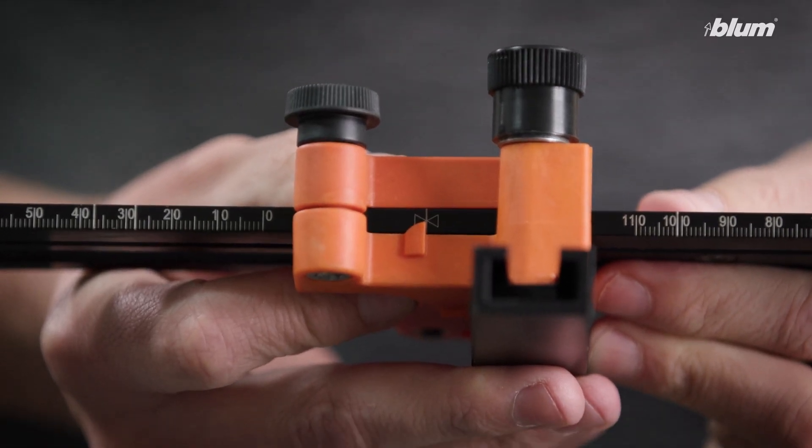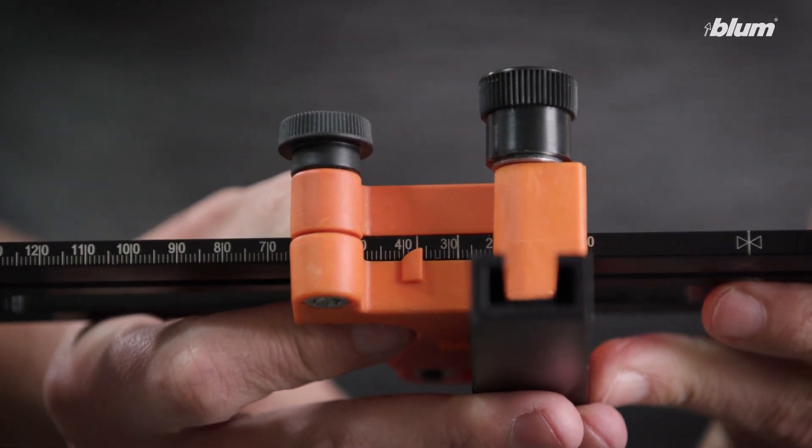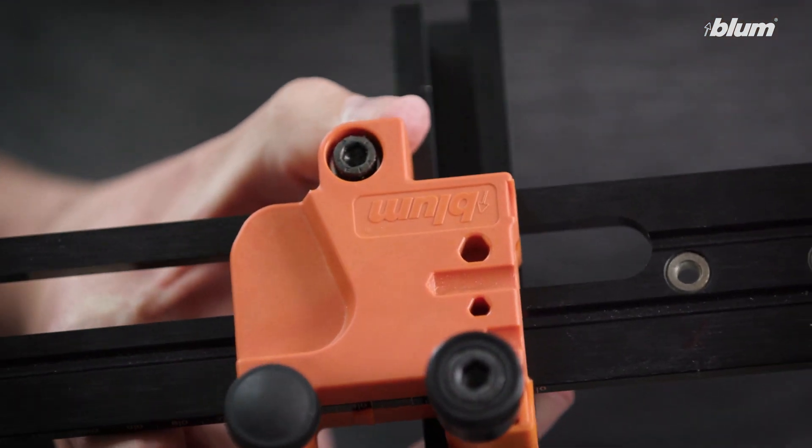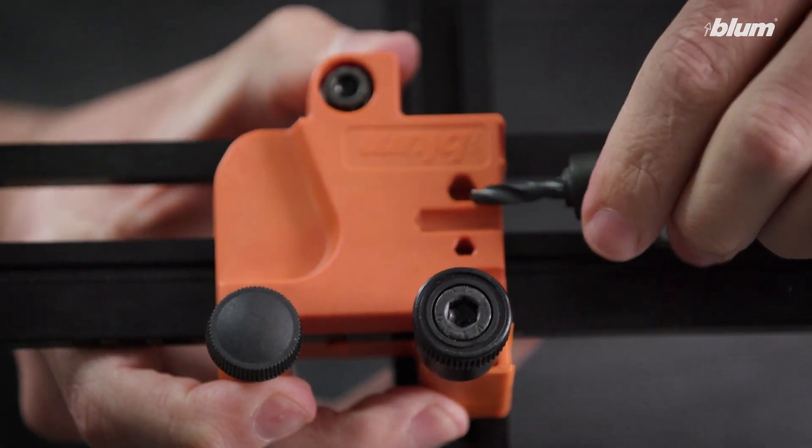First, we need to set our Universal Individual Template to 37 millimeters. Next, we can go ahead and check, and if needed, set our drill bit depth.